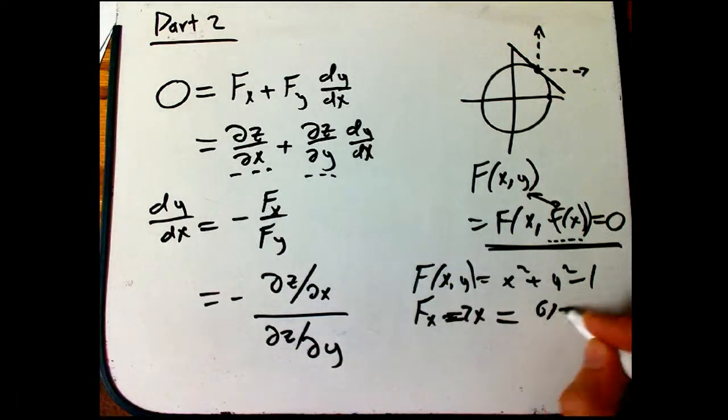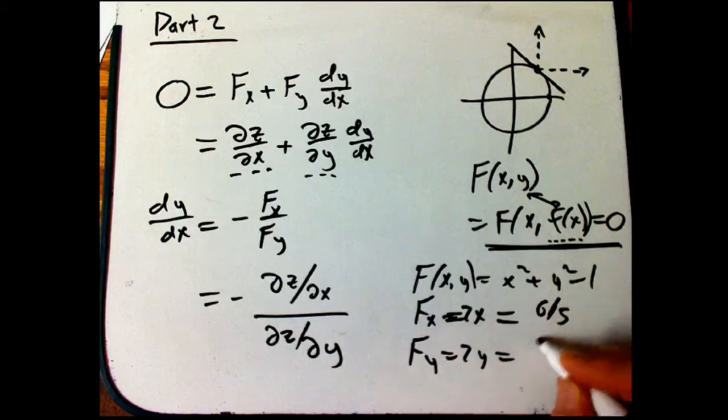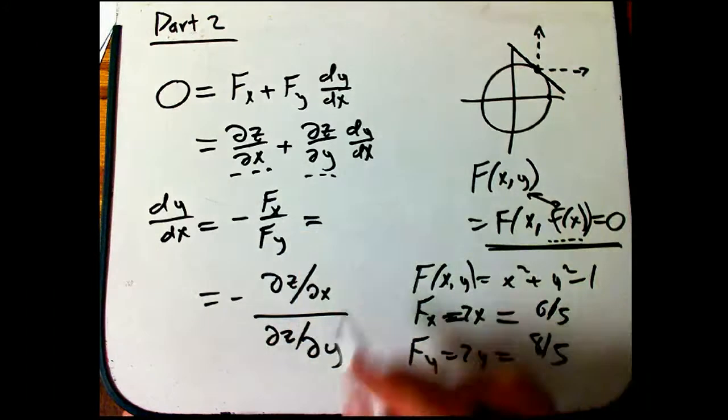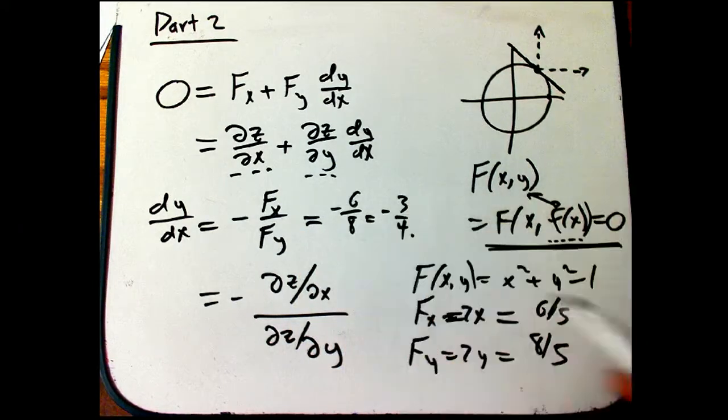This is going to be 6/5, big Fy is 2y, it's going to be 8/5. And then the ratio here is going to be minus 6/8 or minus 3/4.